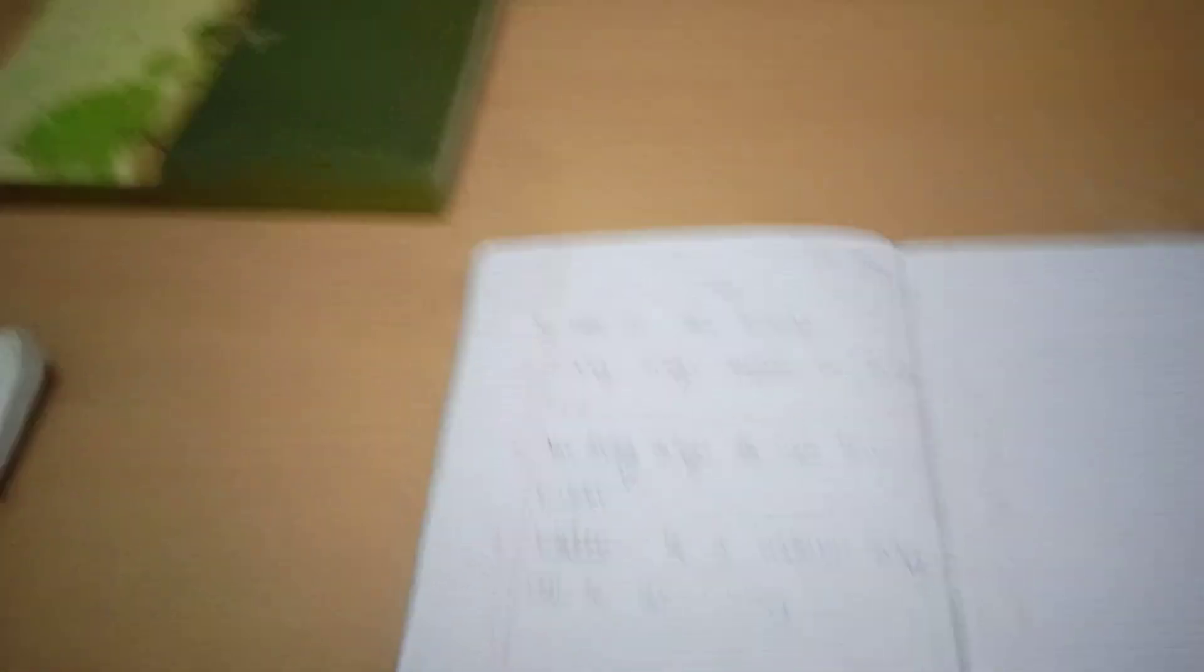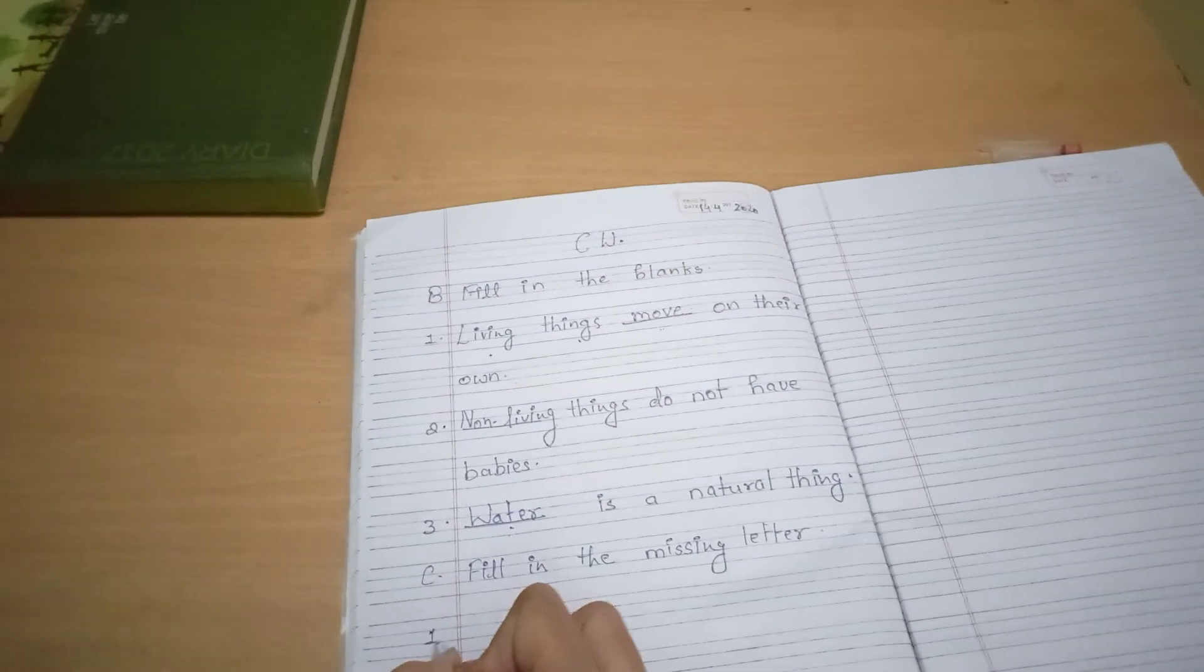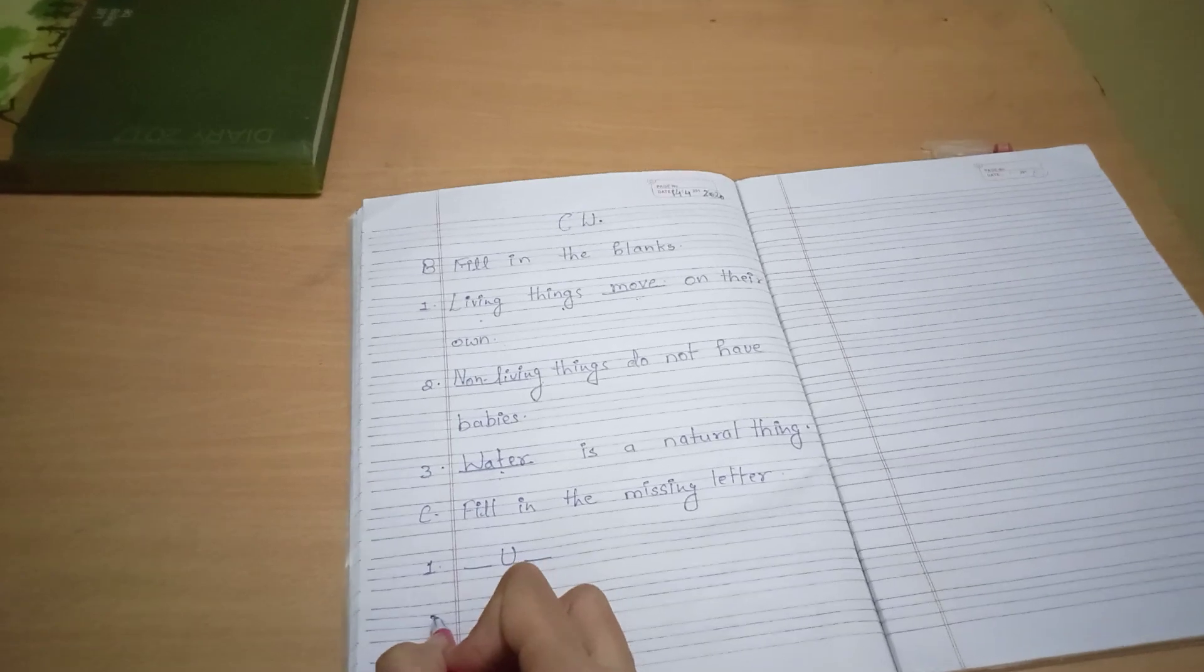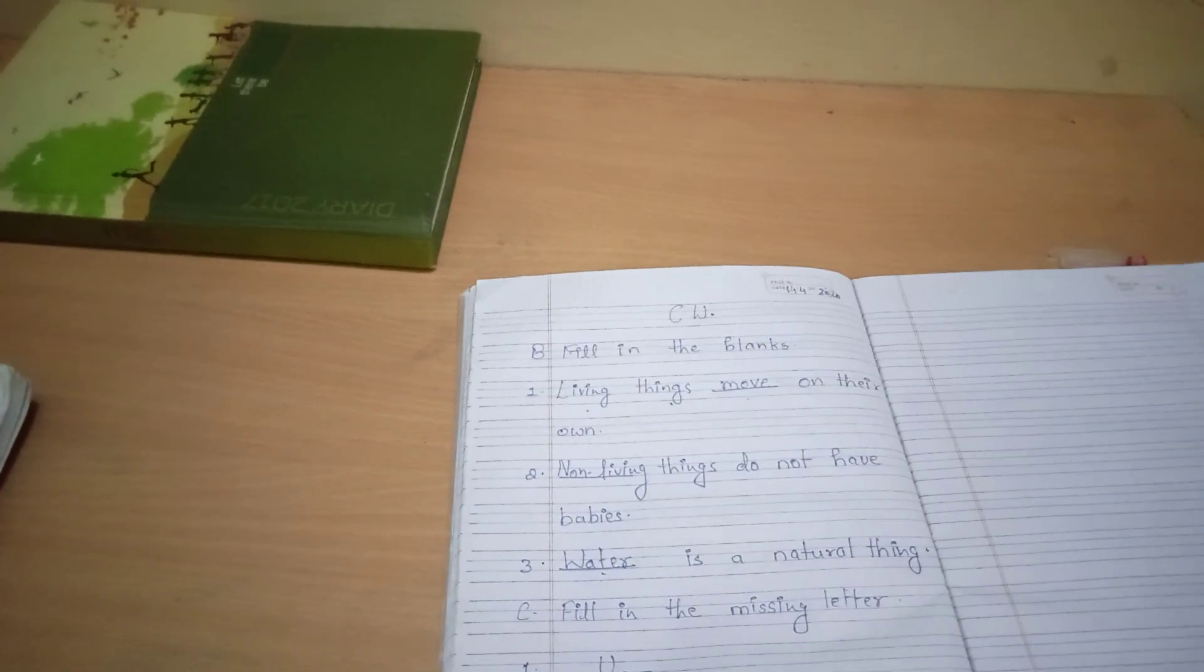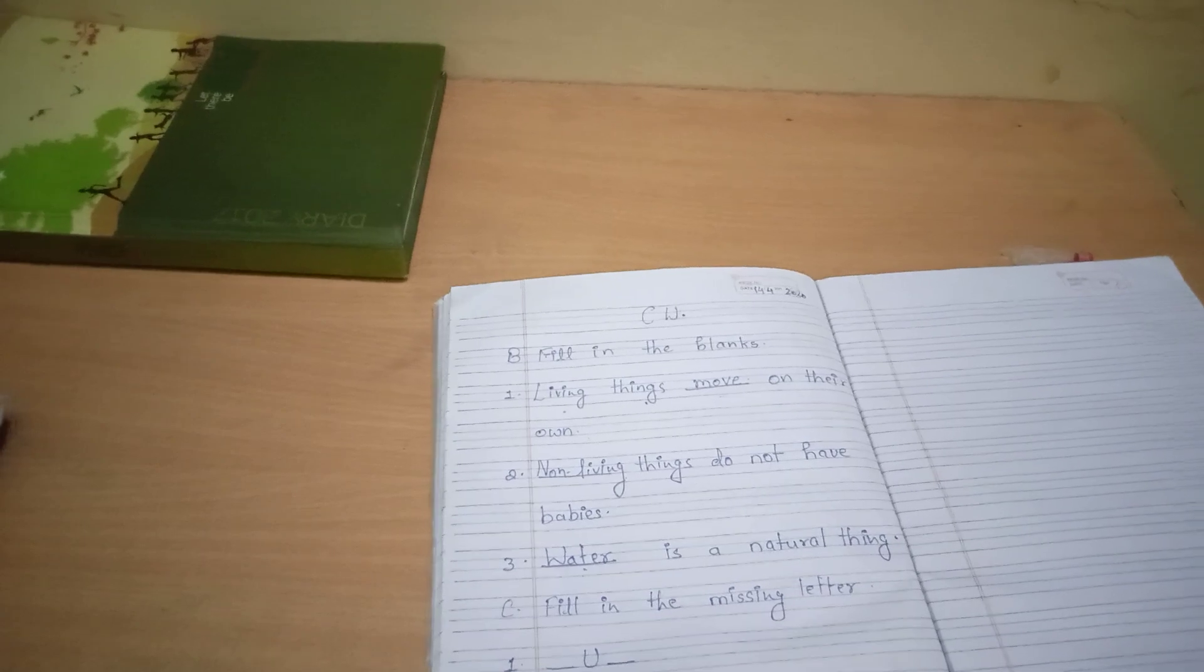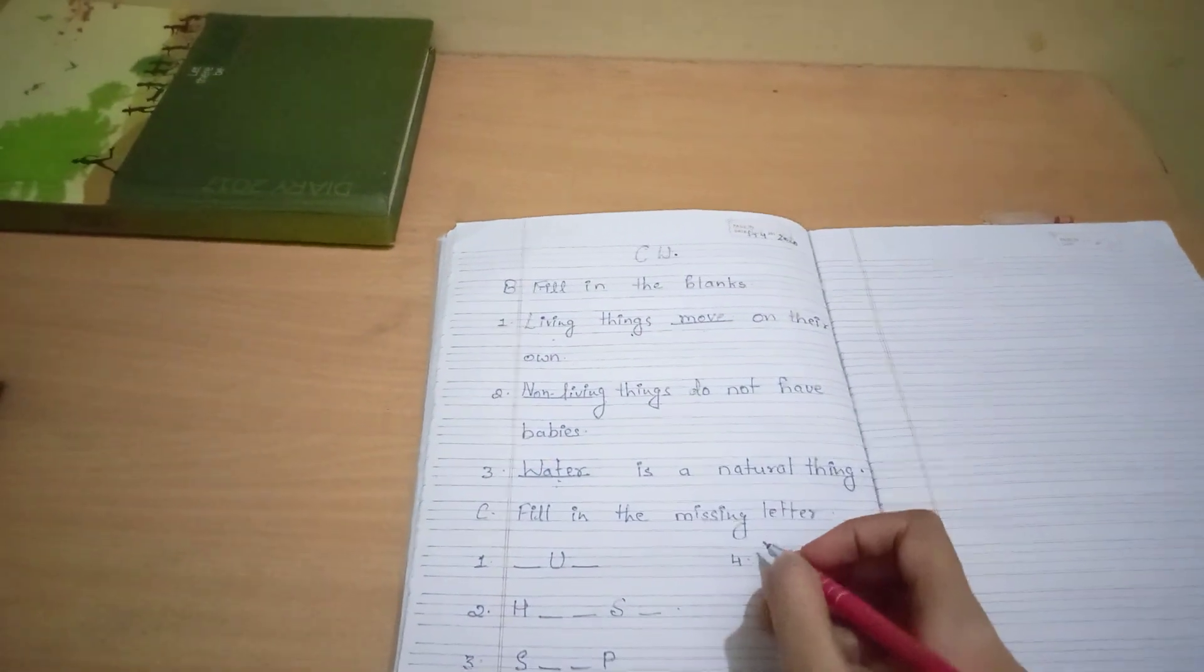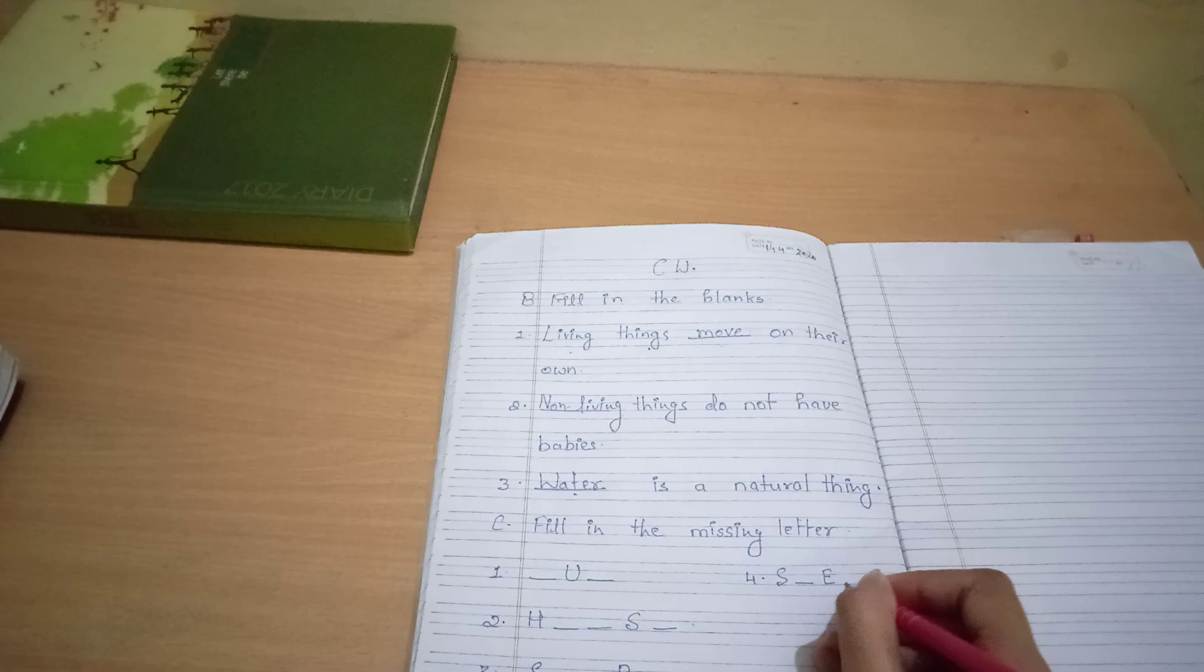So number one is dash, you, dash. यहां पे से भी दो letter missing है, जो हमें find out करना है. Guess करना. Number two is H, dash, dash, H, dash. And number three is S, dash, dash, P. Number four, S, dash, E, dash, P.